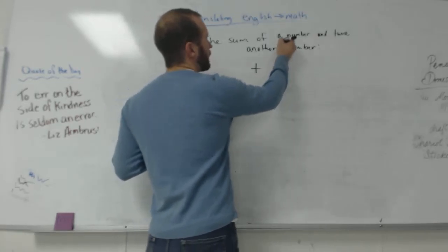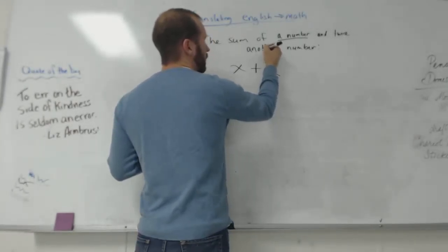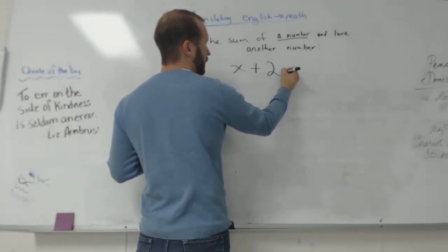X. I'm adding a number, which is X, and twice, which is two times another number, which we could write Y.